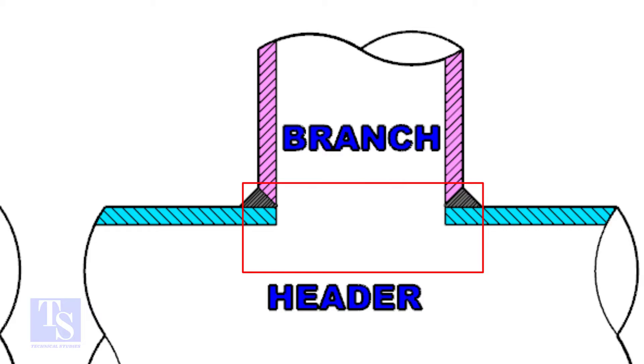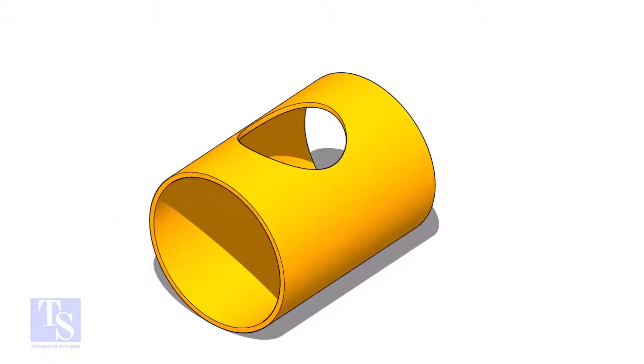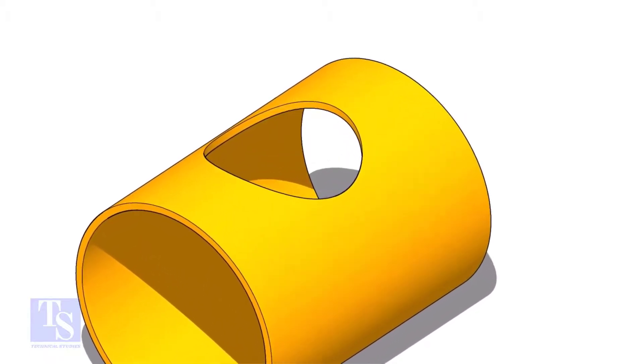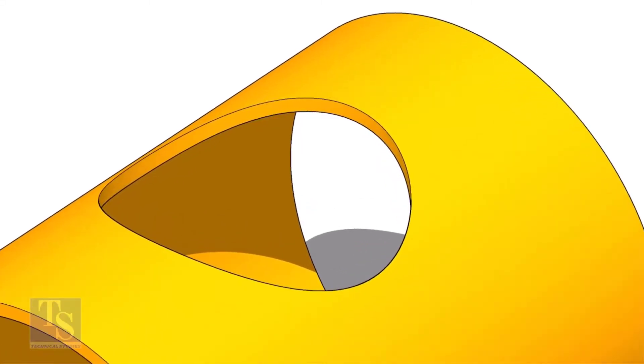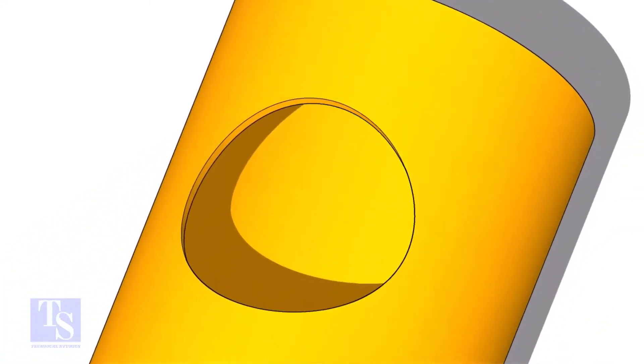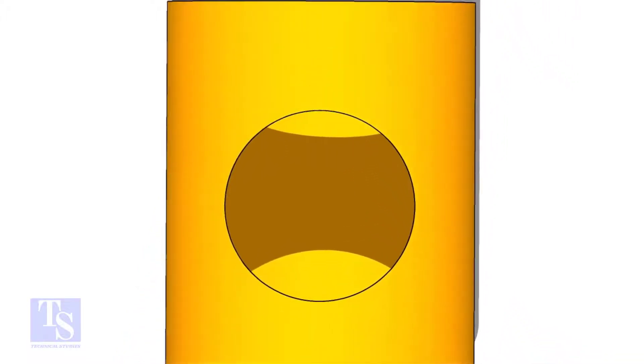And on the header pipe, a hole is there. The diameter of the hole on the header pipe is the same as the inside diameter of the branch pipe. Stub-on connections are given when the header and the branch pipes are of the same size or the branch pipe is only one unit less than the size of the header.